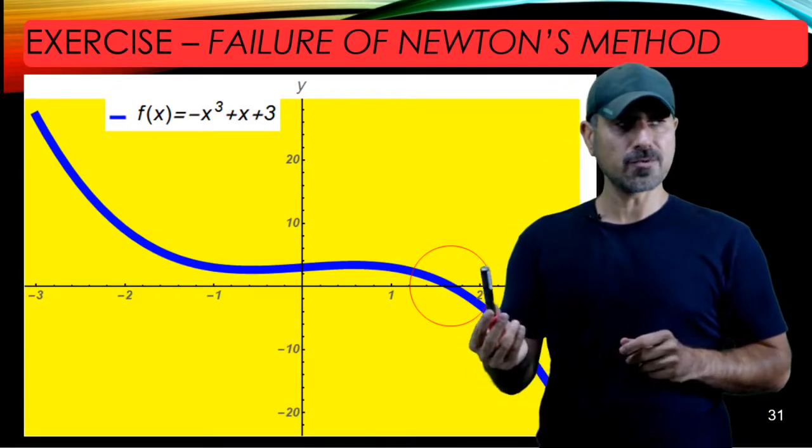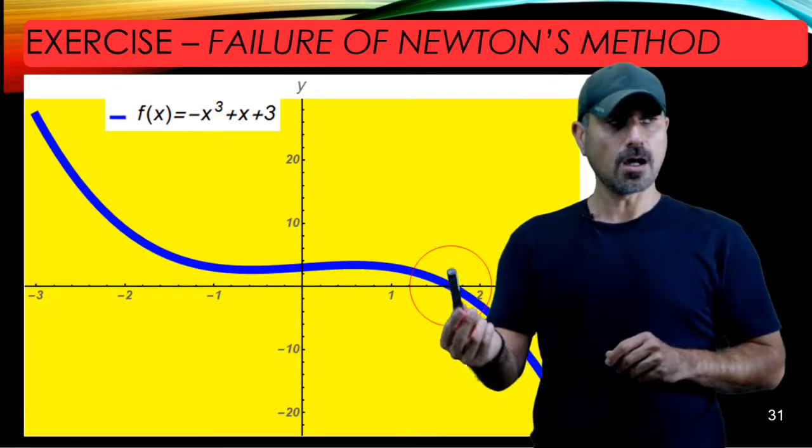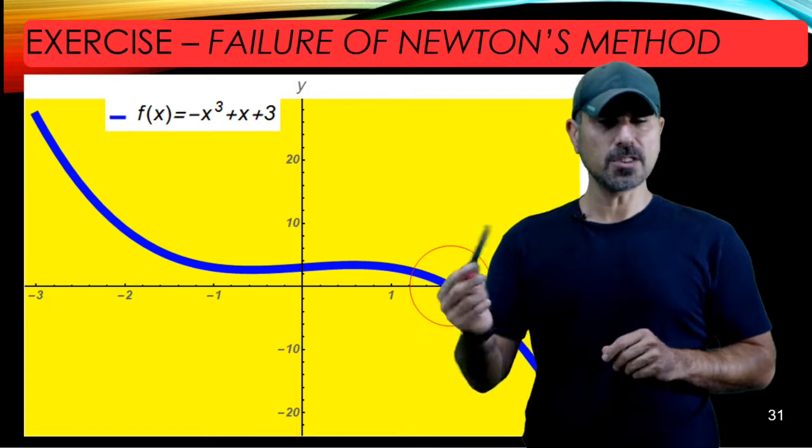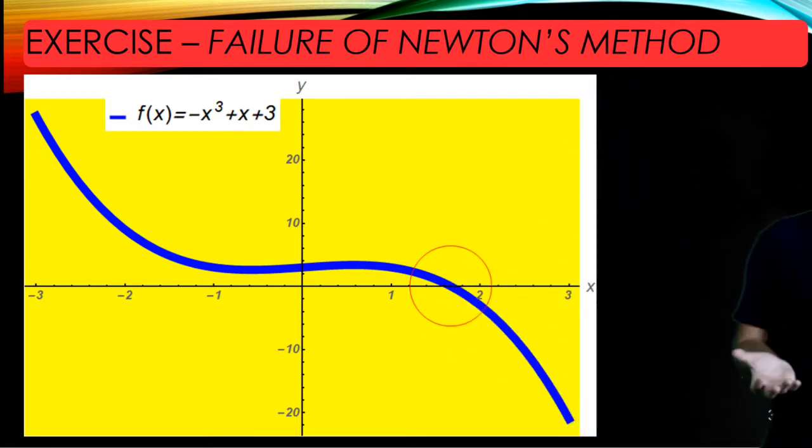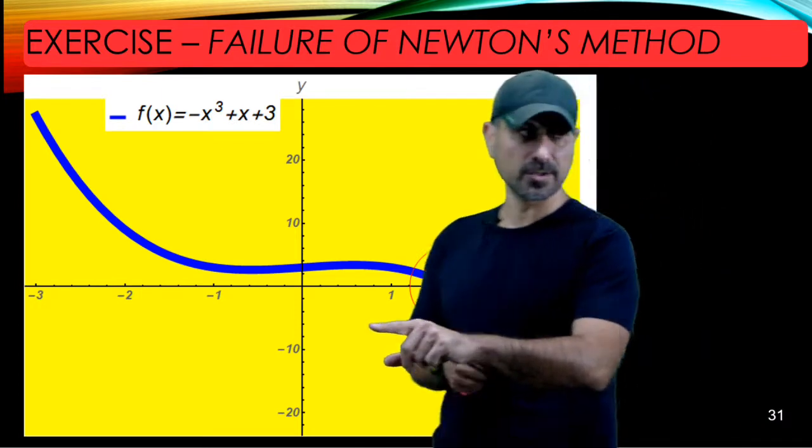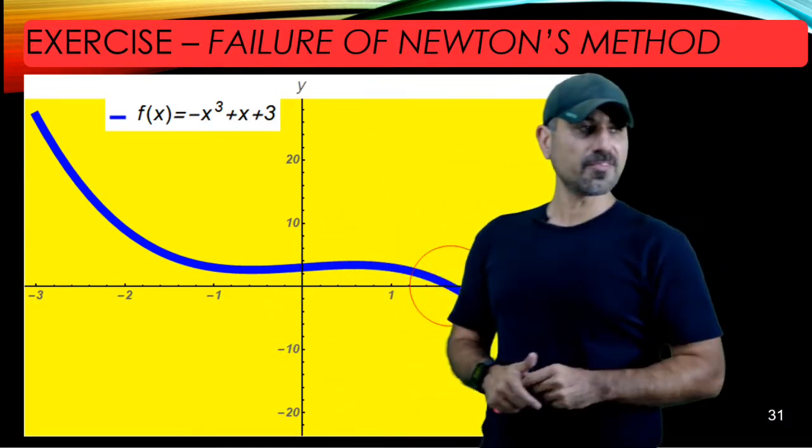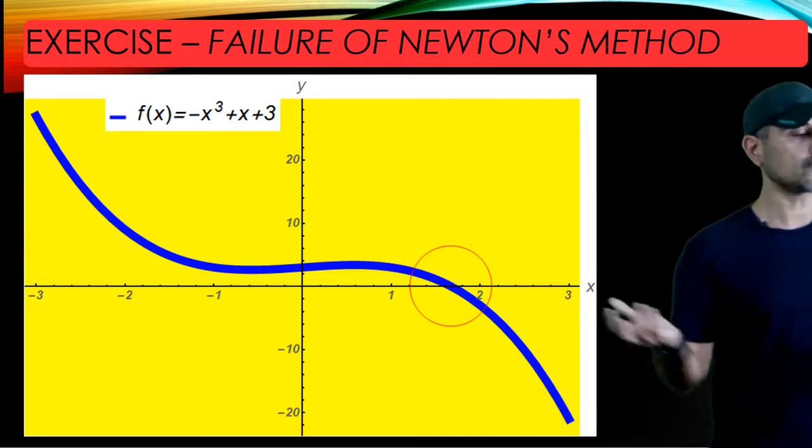I'll show you the graph of the function here. There is only one x-intercept, and we're going to show that we won't be able to get closer to this root when we choose x₁ to be zero to start with.